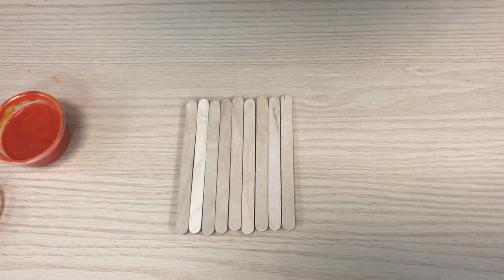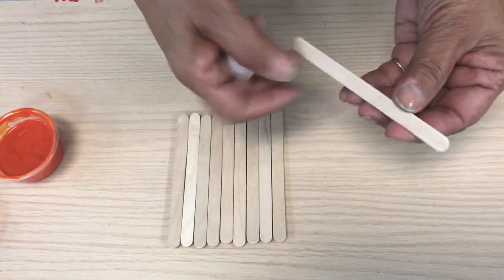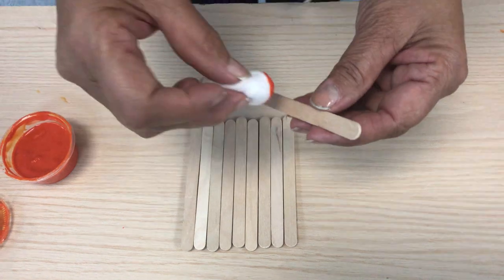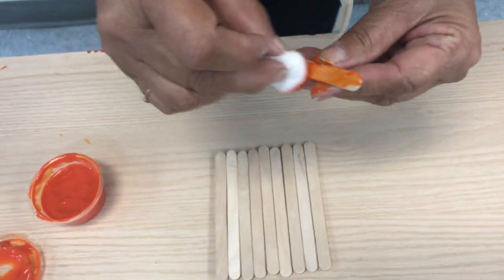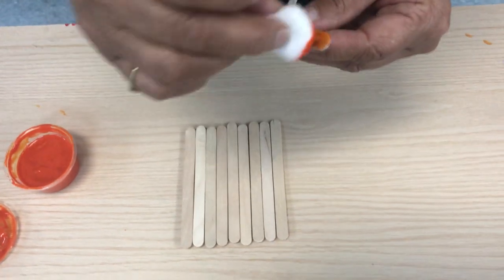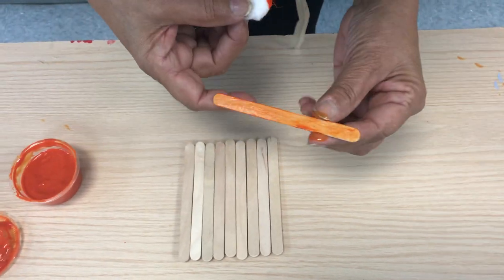You had an extra popsicle stick. You want to go ahead and paint that one. El palito que tenemos extra lo vamos a pintar de anaranjado y ese va a ser parte del sombrero.